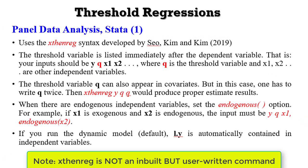In STATA, the threshold analysis is performed using the XTNREG syntax developed by CEO Kim and Kim (2019). If you are using that syntax, the threshold variable is listed immediately after the dependent variable. So the dependent variable comes first, followed by the threshold variable and other regressors.